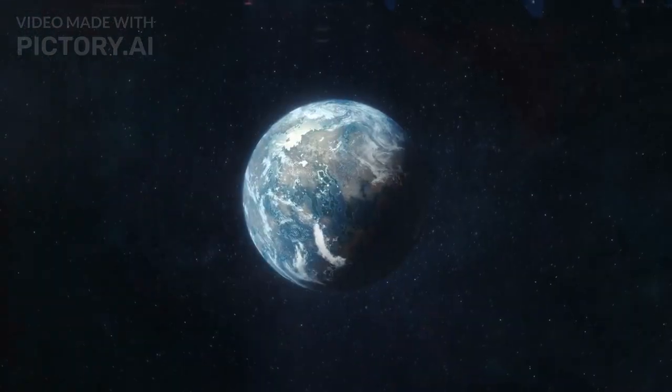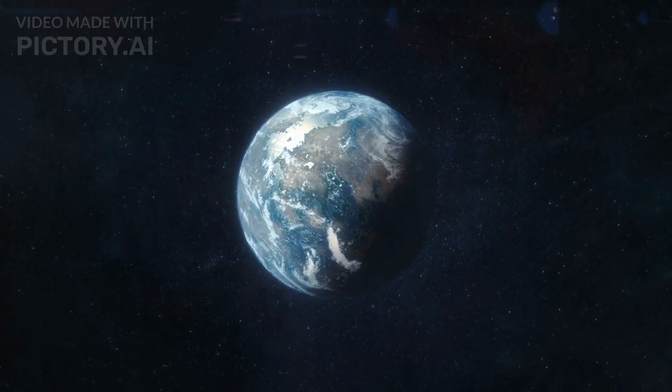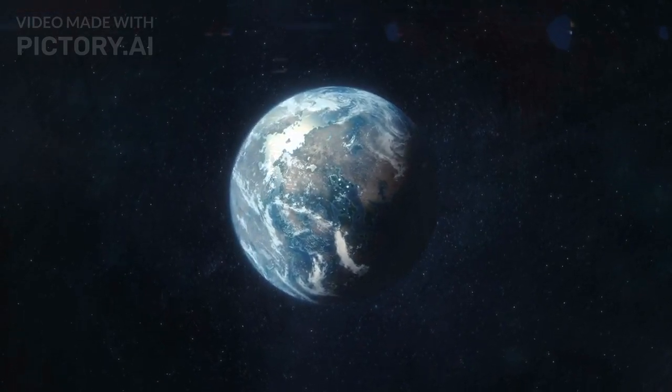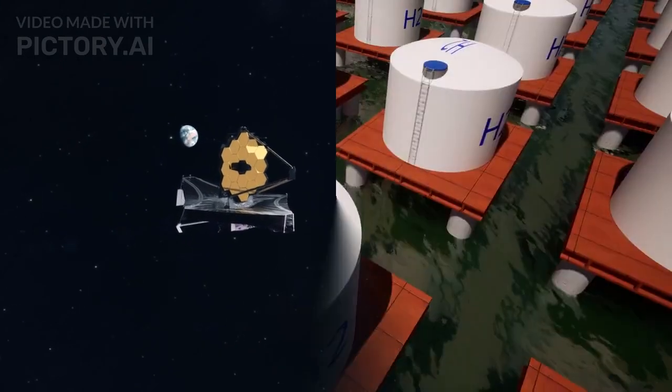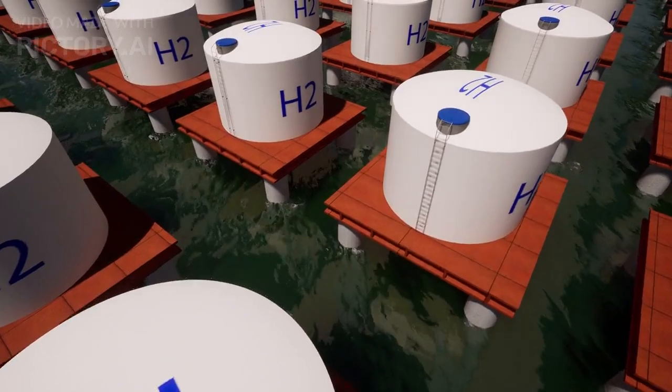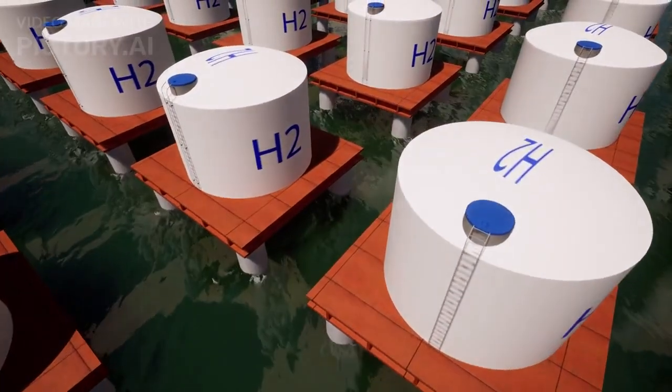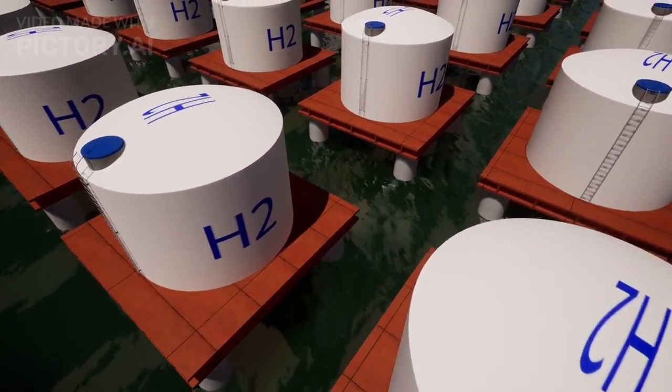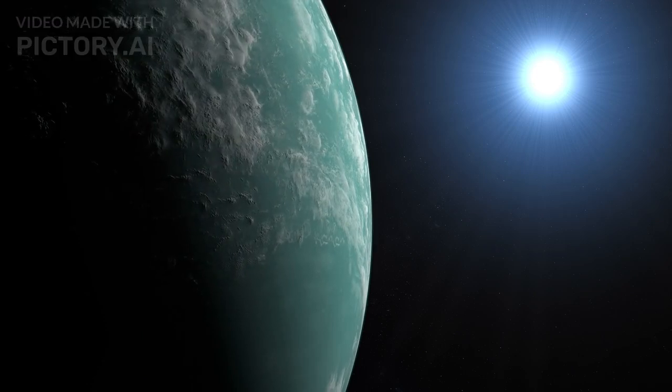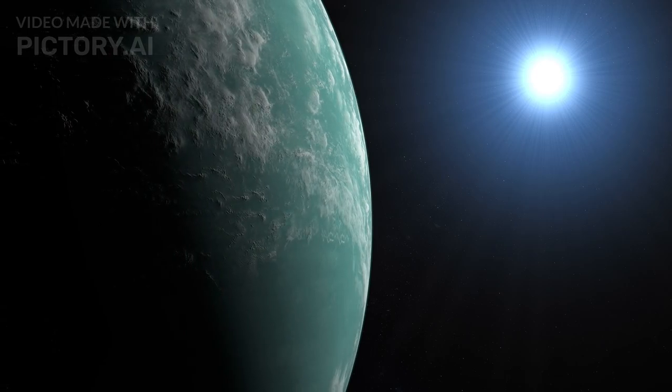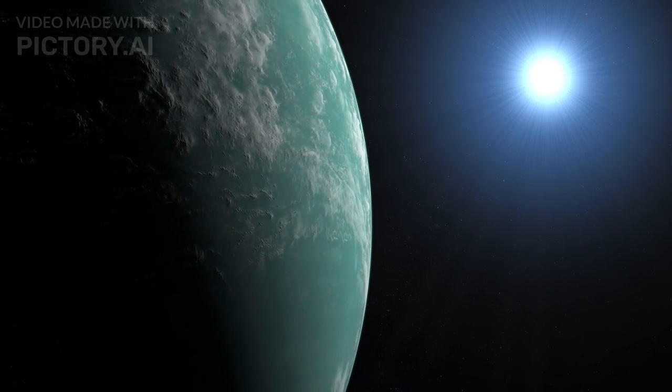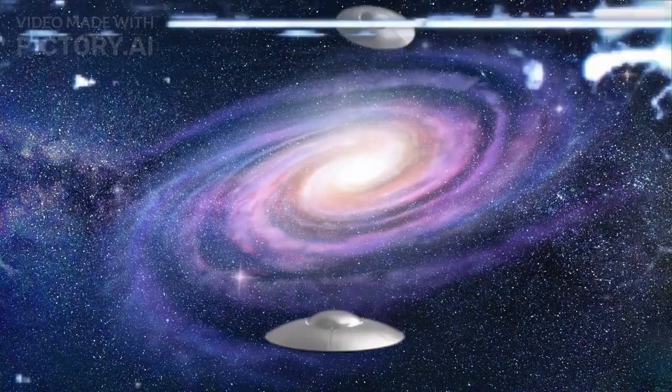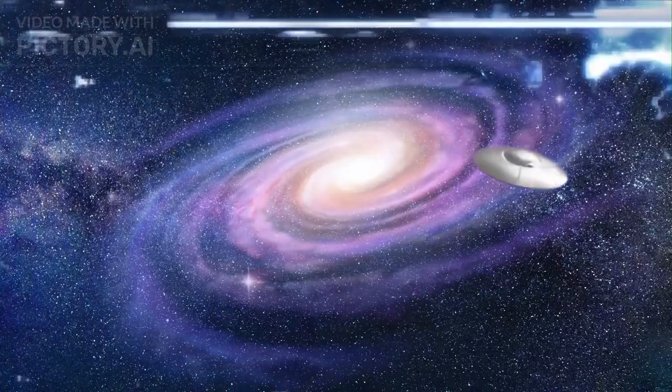In the search for life beyond our planet, the exoplanet K218b stands out. The telescope detected water vapor, methane, and carbon dioxide in its atmosphere, indicating a hydrogen-rich environment and possibly an ocean. Even more intriguing is the presence of dimethyl sulfide, a compound associated with life on Earth, raising exciting possibilities about extraterrestrial life.